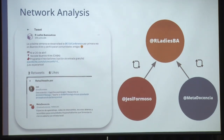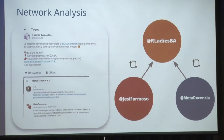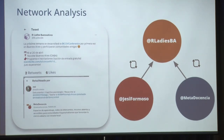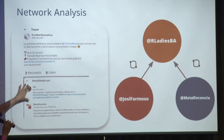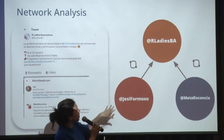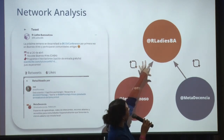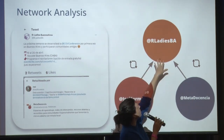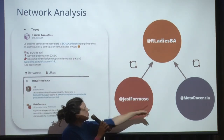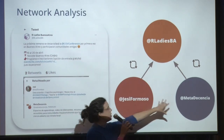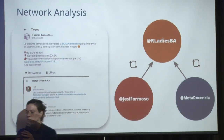We used this information to carry out a network analysis. Each user was a node, and the links between nodes — the edges — were the retweets. For example, we have a tweet posted by Our Lady Buenos Aires, retweeted by myself and by MetaDocencia. So we have three nodes and two links — one between myself and Our Lady Buenos Aires, and one from MetaDocencia to Our Lady Buenos Aires. There is no link between myself and MetaDocencia because in that period we didn't retweet each other's content with those specific terms.